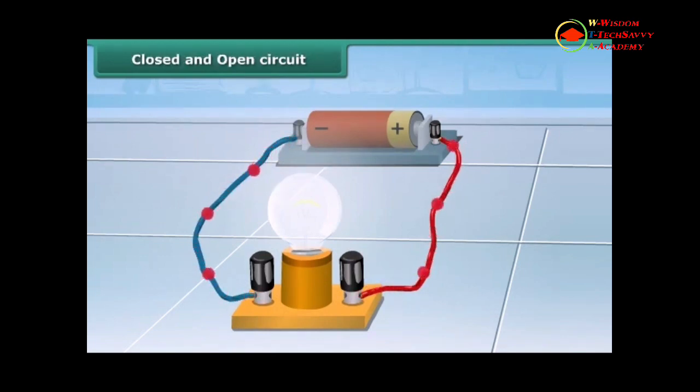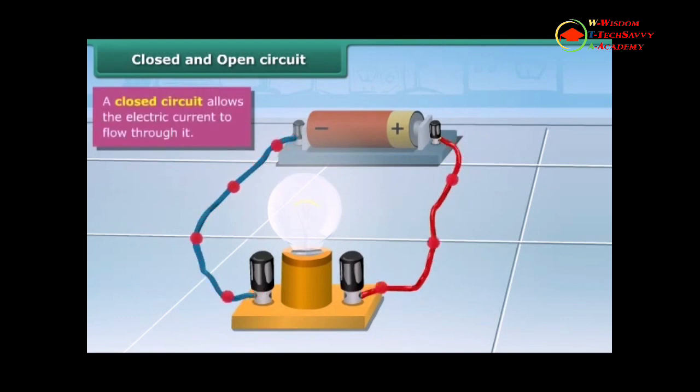Closed and open circuit. If you see both the wires are connected to both the terminal, it is an unbroken path. It is a closed circuit.